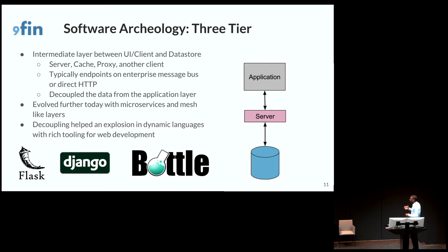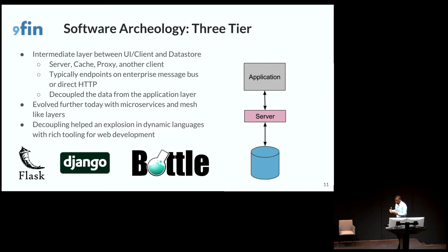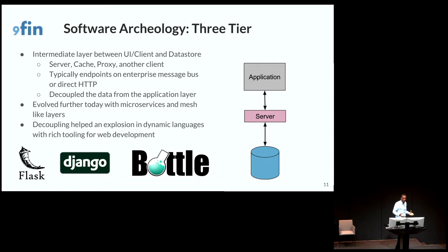Then we moved to the three-tier architecture, and now the extension of it in mesh networks and microservices, where we put something in between the end destination of the client and the data store layer — a server, cache, proxy, or some other client. Typically, endpoints on an enterprise messaging bus, or if you're on the web, just HTTP brokered protocols. This decoupled the data storage layer from the application layer, which allowed the two streams to develop at their own pace. And this led to the explosion in all these web tools and technologies — Python has always been involved in web frameworks.